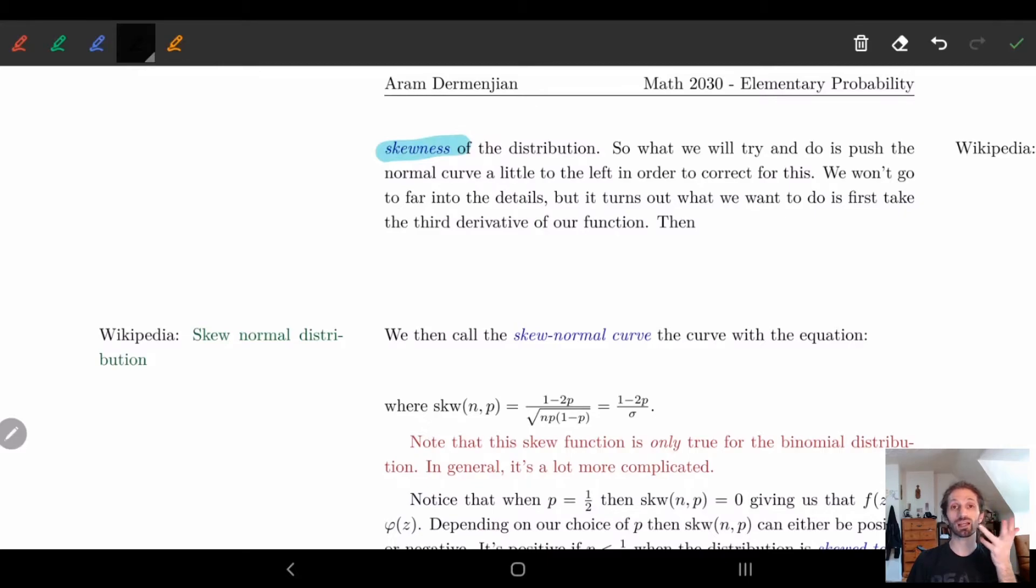So we're not going to go too far into detail how this works. But it turns out what we're going to do is actually take the third derivative of our function. So remember, the function that we've been working with for our normal curve is given by 1 over square root of 2π, e to the minus 1/2 z squared.